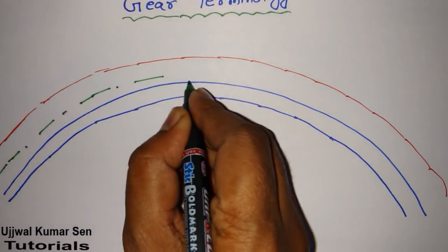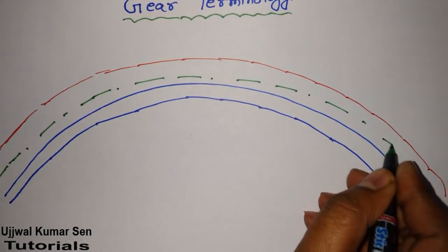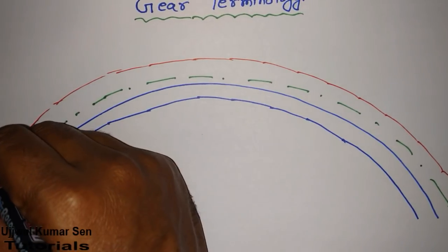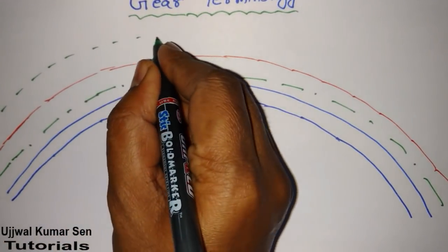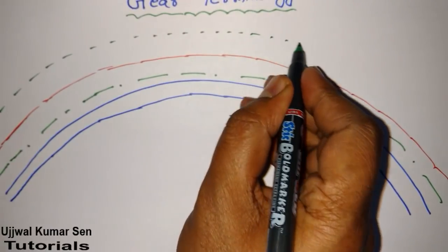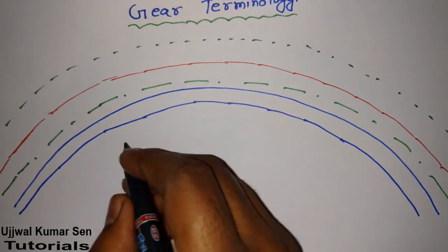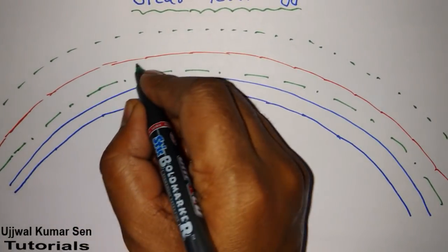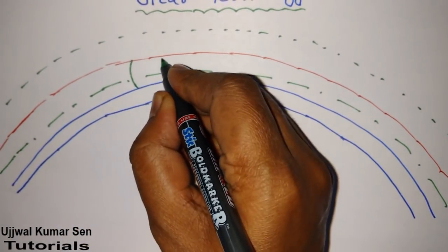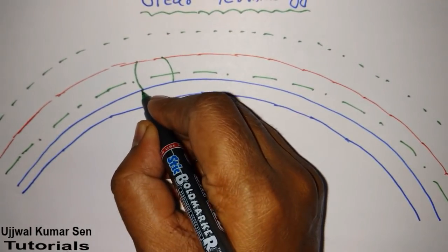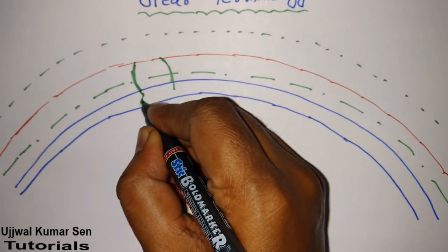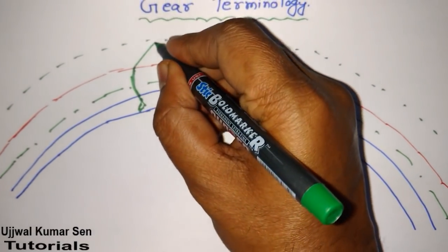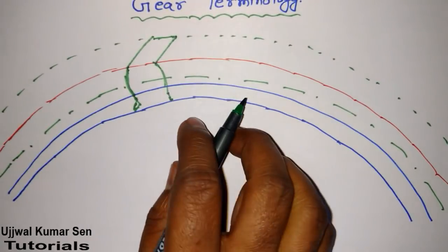Without practice it will be quite difficult. So from the beginning, start drawing with me. Let's go for the diagram. I hope you are drawing with me. Let's say this is gear 1 and this is gear 2. Draw it like this, and then again like this.